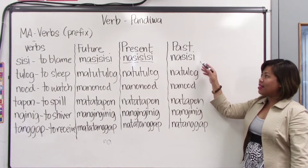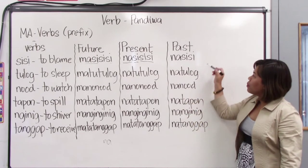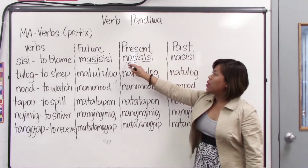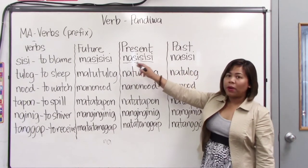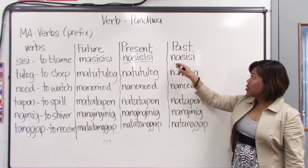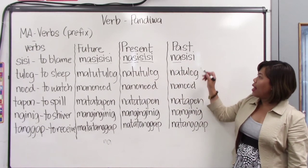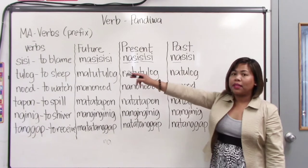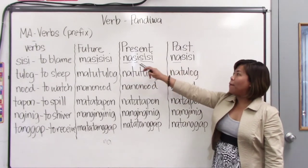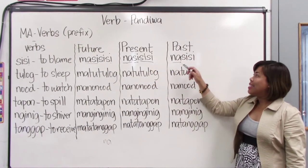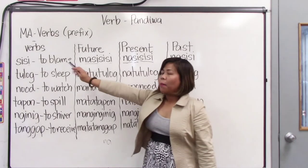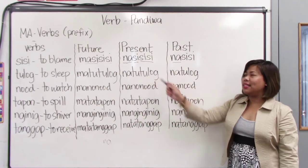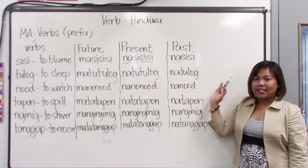Look at the past tense. It's the same pattern as the mag verb in the previous lesson. We still use the prefix na from the present, but we do not copy the first syllable of the verb anymore. We just copy the entire verb. So from na-si-si-si, it will become na-si-si. Base form: sisi. Future: ma-si-si-si. Present: na-si-si-si. Past: na-si-si.